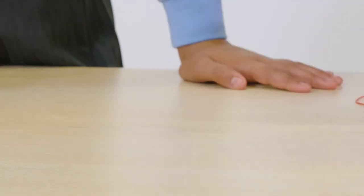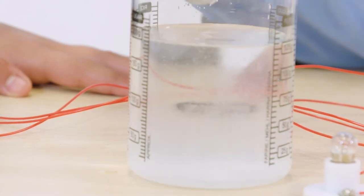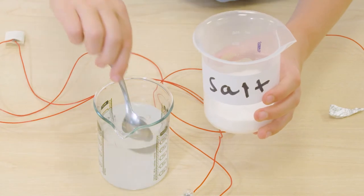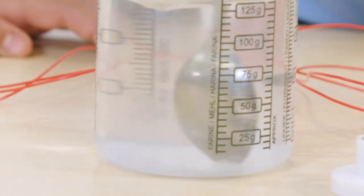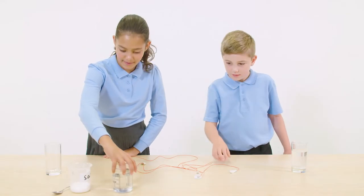Now we'll test whether salty water conducts electricity. Our investigator is adding two teaspoons of salt to the distilled water in the glass beaker. OK, the salt has dissolved. Let's see what happens.